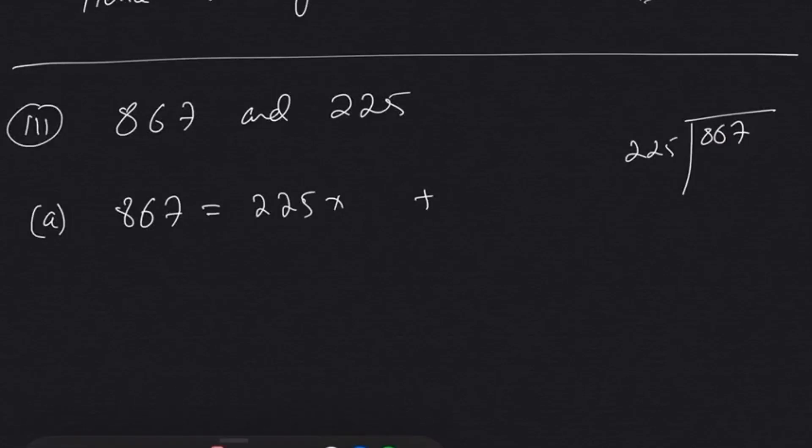Sorry, it's not 225, it is 255. So 255 into 3 times. So 255 into 3, that will be 765. So remainder 102.